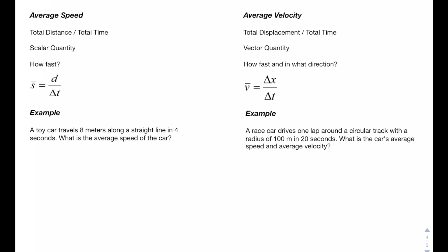Lastly, we're going to be talking about the difference between average speed and average velocity. For average speed, we take the total distance and divide by the total time, which will give us a scalar quantity and tell us how fast an object is moving. So for example, a toy car travels 8 meters along a straight line in 4 seconds. Speed is distance over time — our distance was 8 meters and our time was 4 seconds, therefore our speed would be 2 meters per second.